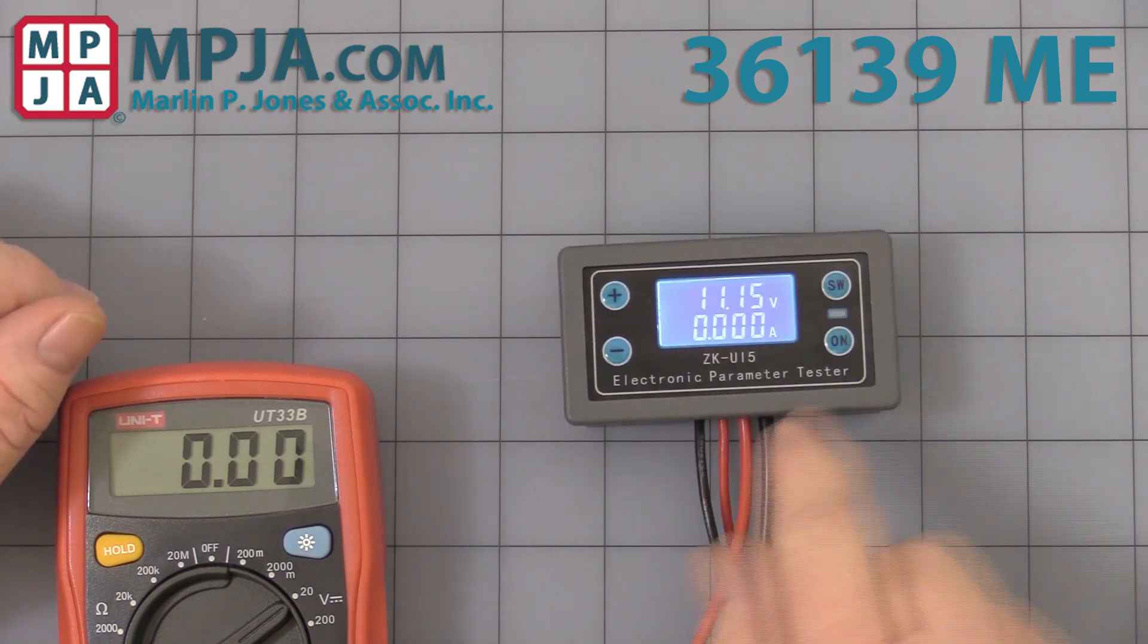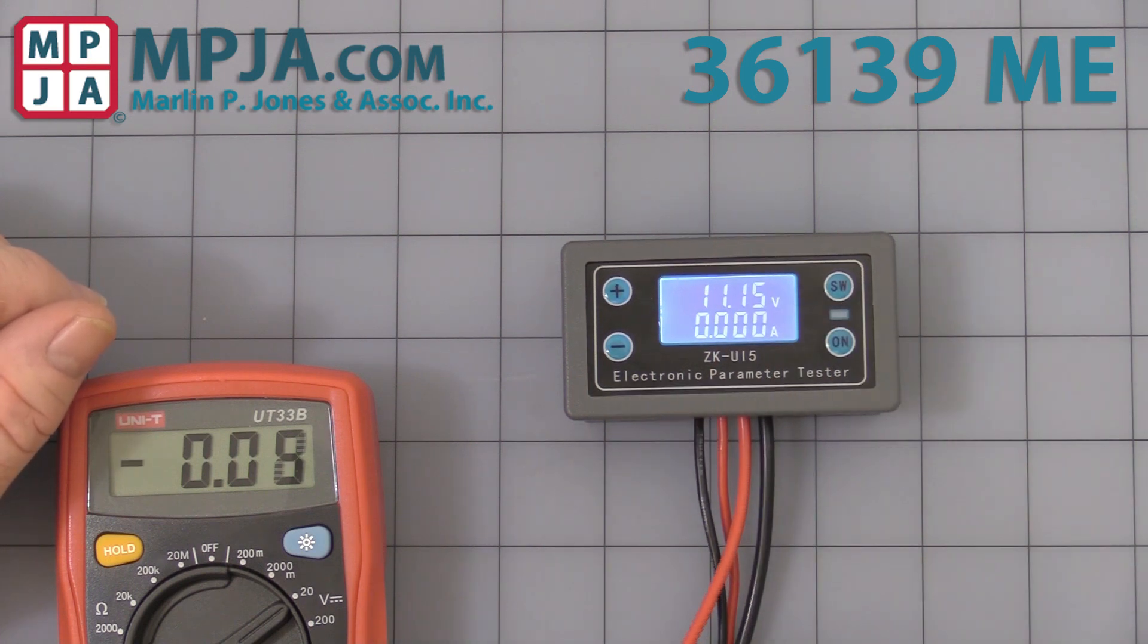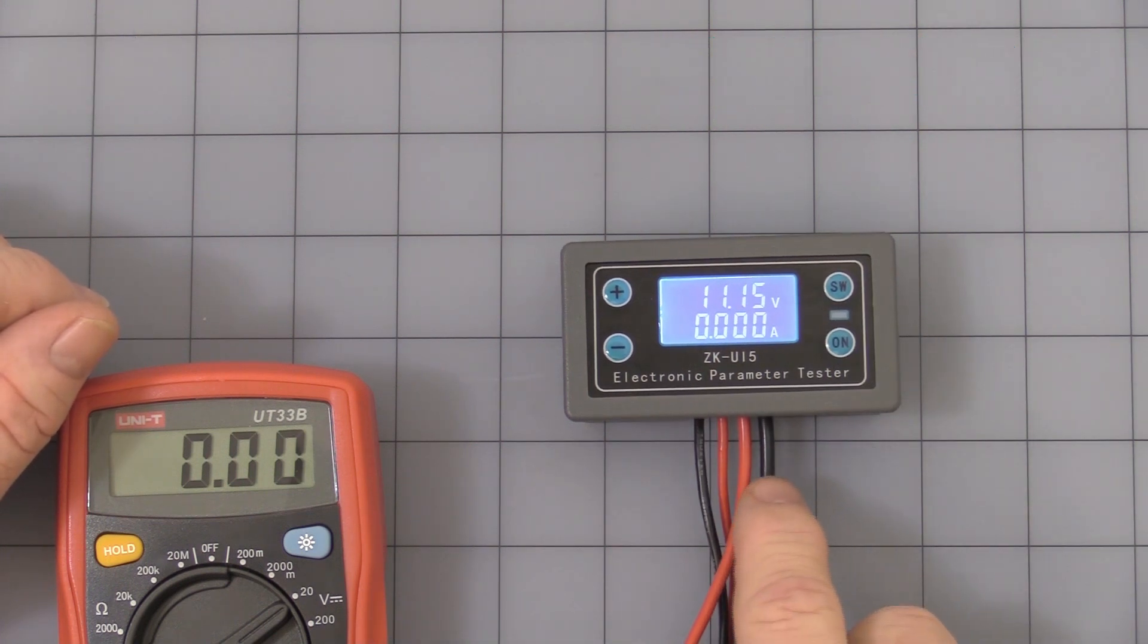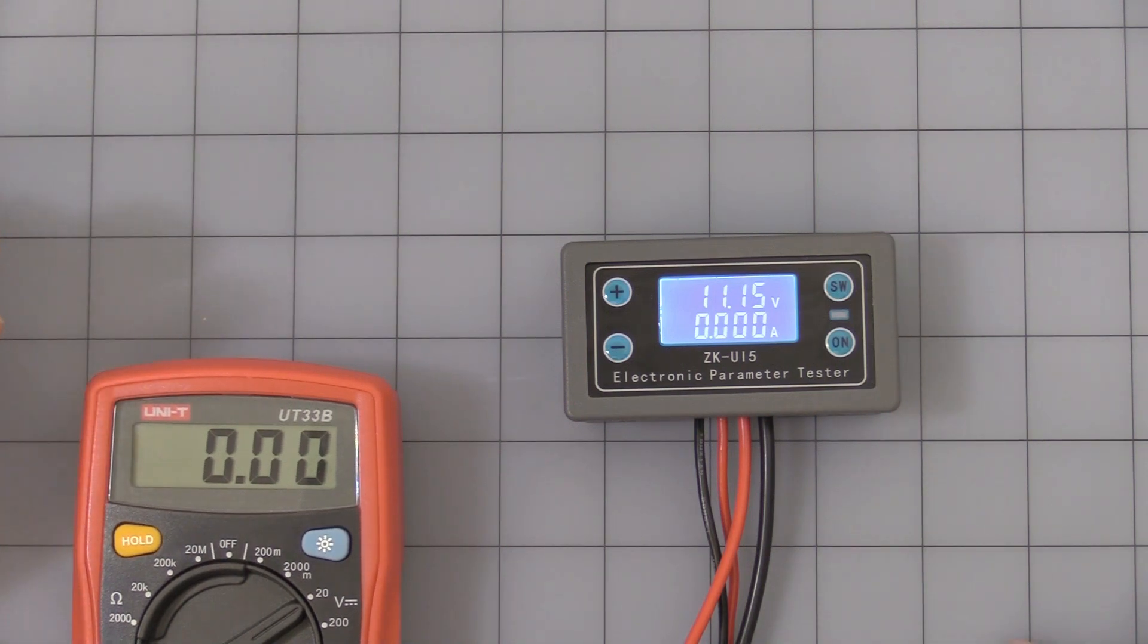As you can see the four buttons: plus, minus, SW, and on. It's displaying a voltage because I have this hooked up to my bench top power supply and the output hooked up to the little panel meter, a little digital multimeter just to show you, give you a visual reference.